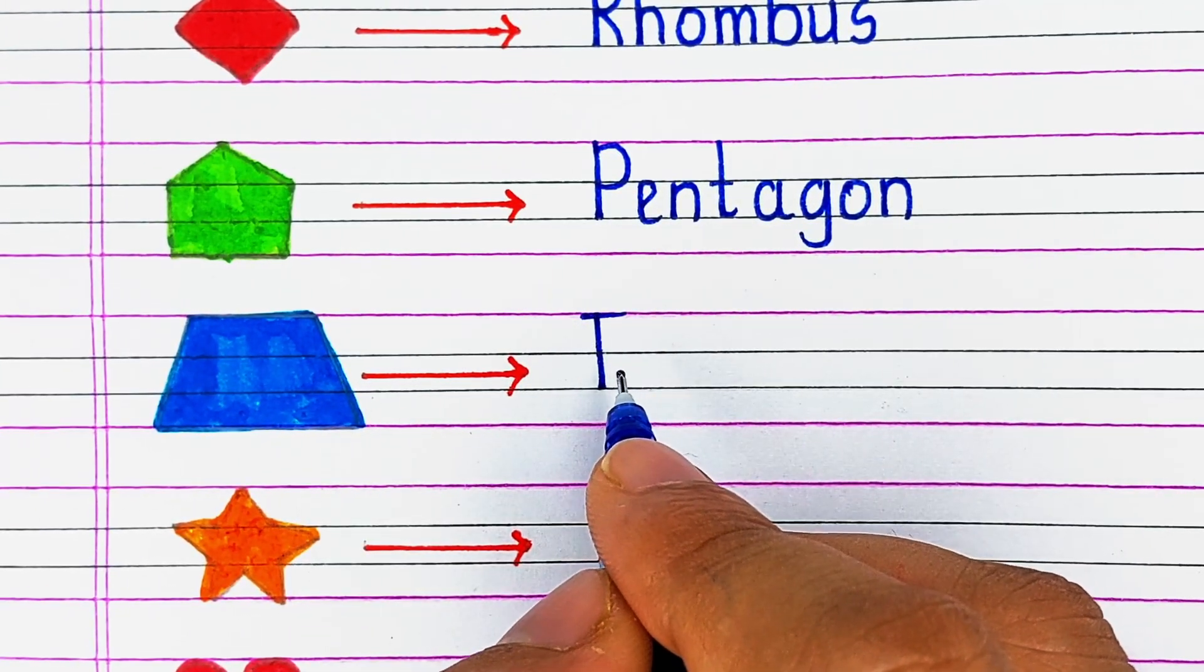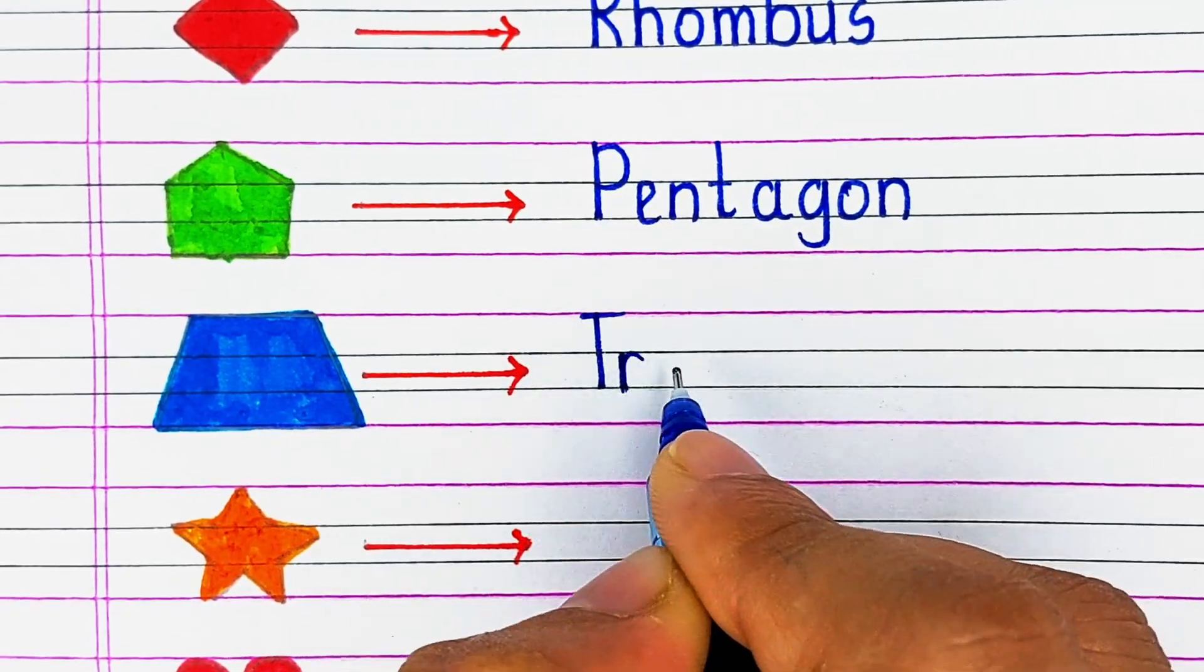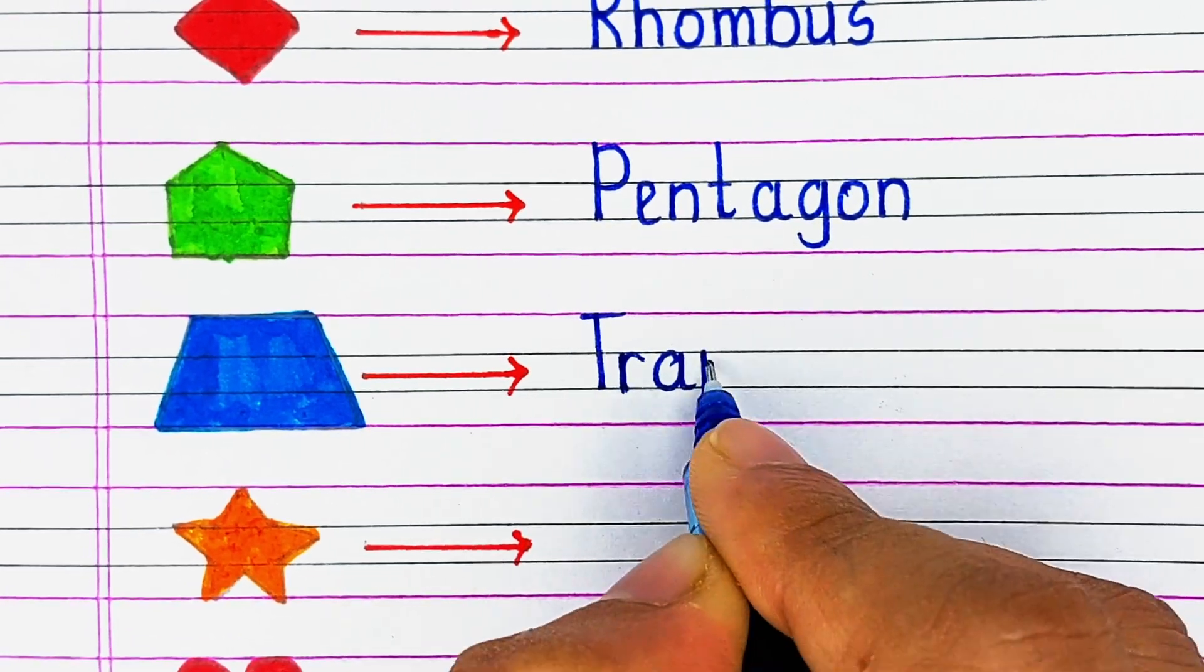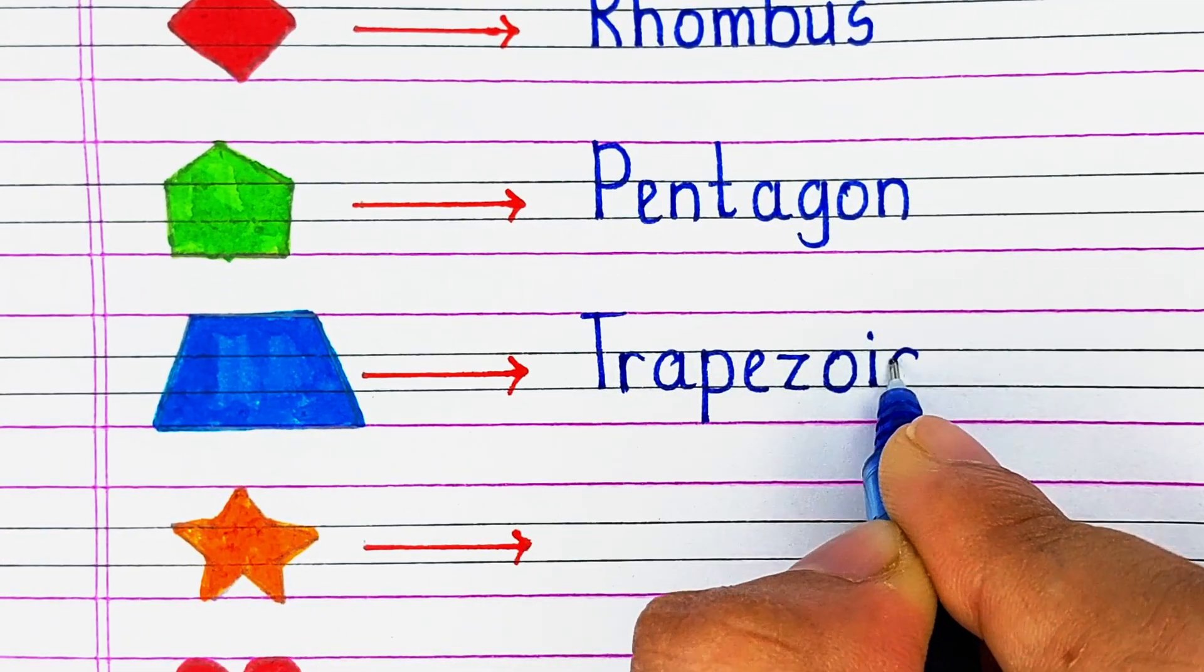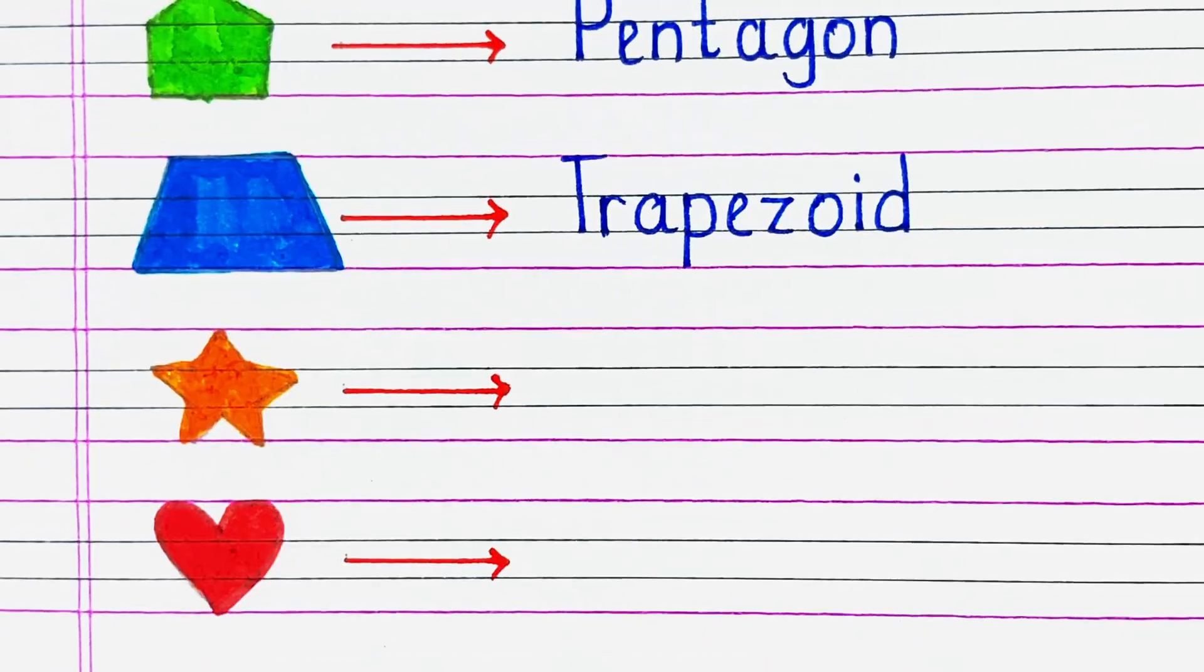Next is a shape with 4 sides in which 2 sides are parallel to each other. It is called a trapezoid.